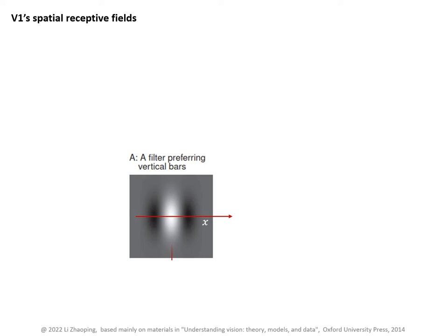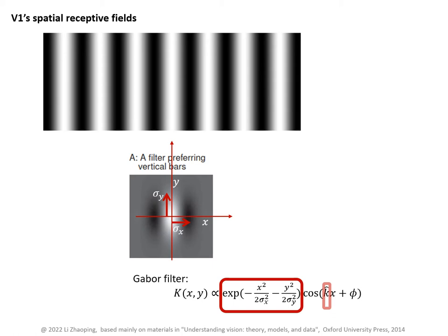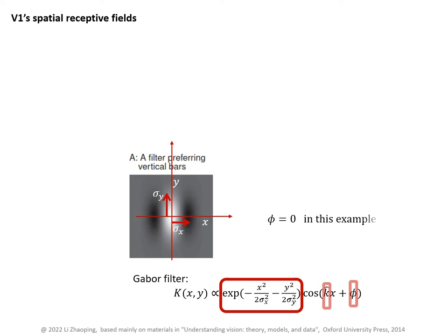With a coordinate system centered on the neuron's receptive field, a linear receptive field is often modeled by a Gabor filter. The width and height of the filter are determined by parameters sigma_x and sigma_y to give the Gaussian envelope for the Gabor filter. The cosine wave within this envelope has frequency k_hat. Without the Gaussian envelope, this wave would look like a full sinusoid. And phi is the phase of this wave.